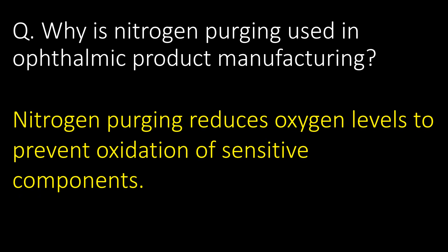Why is nitrogen purging used in ophthalmic product manufacturing? Nitrogen purging reduces oxygen levels to prevent oxidation of sensitive components.